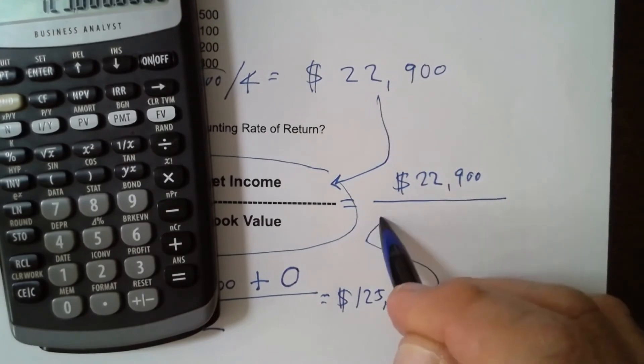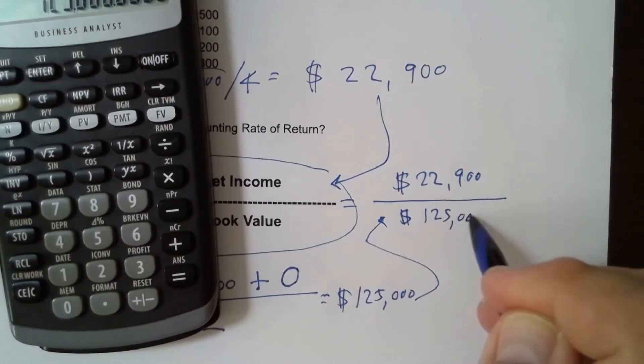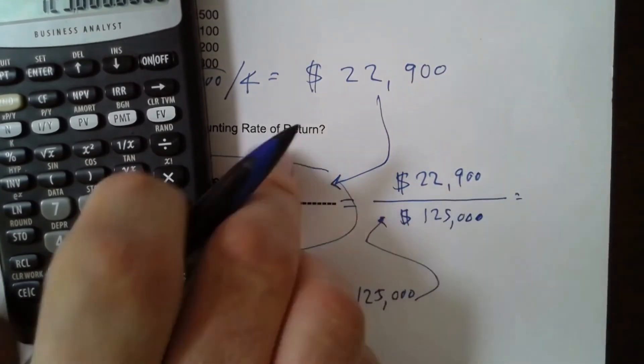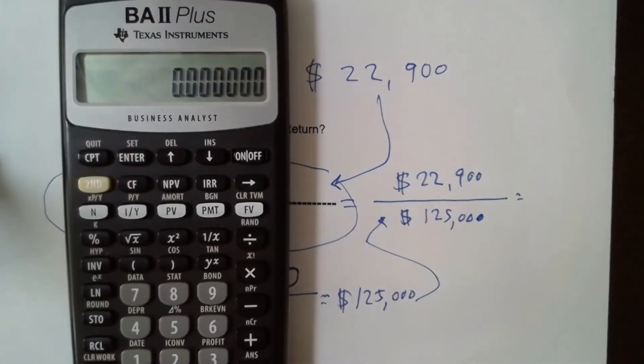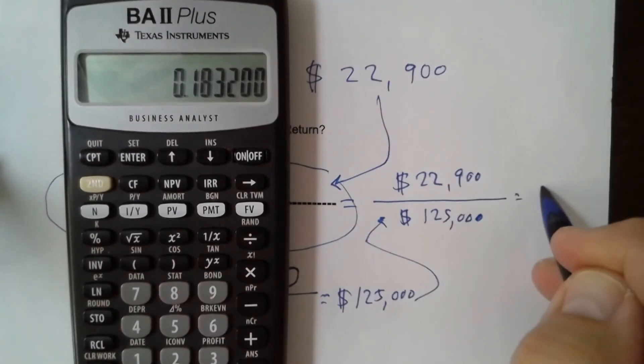That $125,000 is our denominator because that's the average book value. So we just need to divide the two, so $22,900 divided by $125,000 is equal to 0.1832.